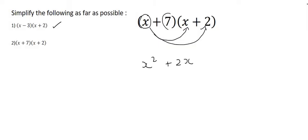Now this 7 has to be multiplied by that x, and it has to be multiplied by that 2. So 7 times x is 7x, and 7 times 2 is 14. There we go.